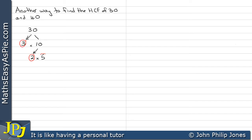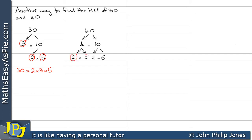We've seen this technique in the previous video, and we can see that 30 is 2 times 3 times 5. We do the same now with 40 — we express it in its prime factors using the factor tree as you can see here. We end up with 40 being 2 times 2 times 2 times 5, which is 2³ times 5.